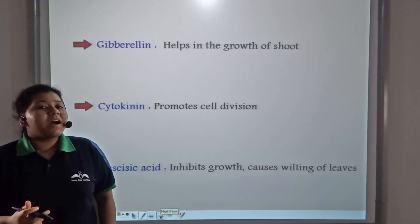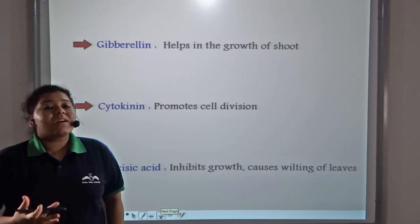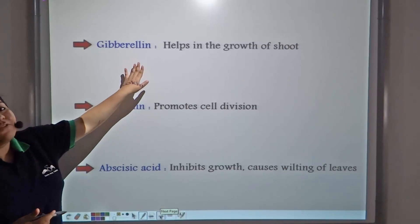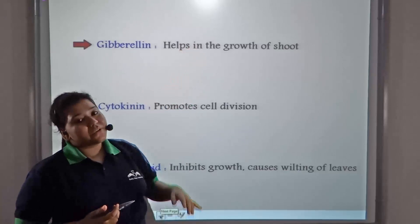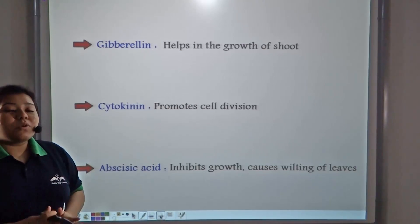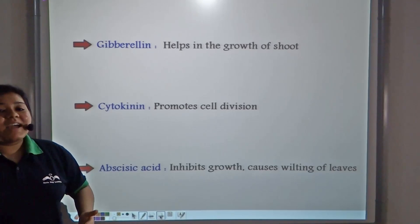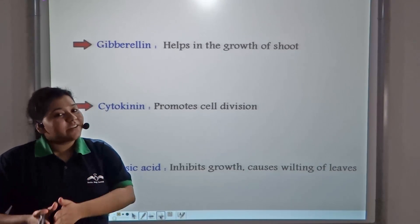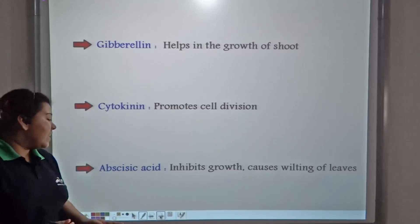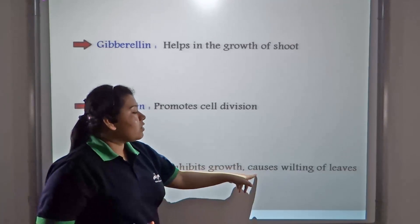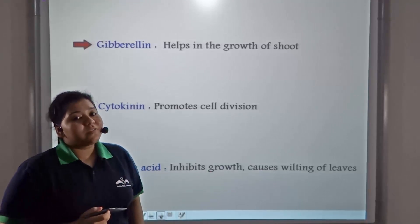There are other plant movements which are controlled by different hormones, such as gibberellin, which helps in the growth of shoots; cytokinin, which promotes cell division and is present in areas of high cell division such as seeds and fruits; and abscisic acid, which inhibits growth and causes wilting of leaves.